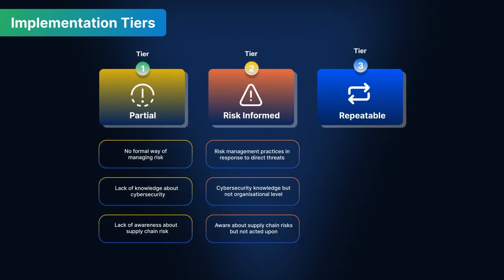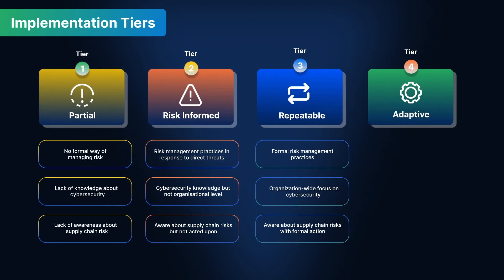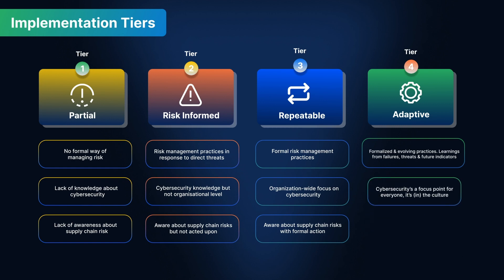Repeatable is the most generally acceptable tier to be in. You have formal risk management practices that are followed and documented, there is an organization-wide focus on cybersecurity, and not only is there awareness about supply chain risks, but there is formal action around it — written agreements, policies, and monitoring. Adaptive is a house in order. It involves having formalized and evolving cybersecurity practices that include learning from past failures, current threats, and future indicators. Cybersecurity is a focus point for leadership the same way as it is for employees and is ingrained in the culture. The organization uses real-time monitoring to understand and act upon supply chain risks, along with formal and informal action on top of that.